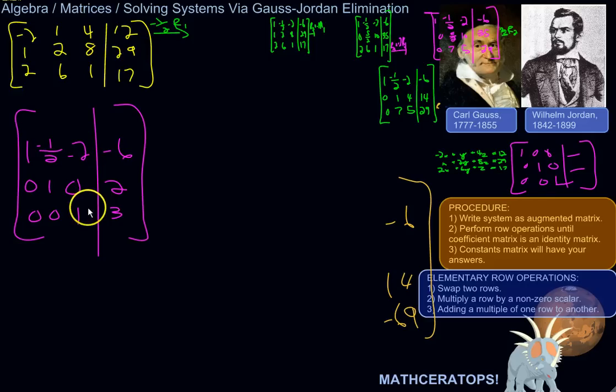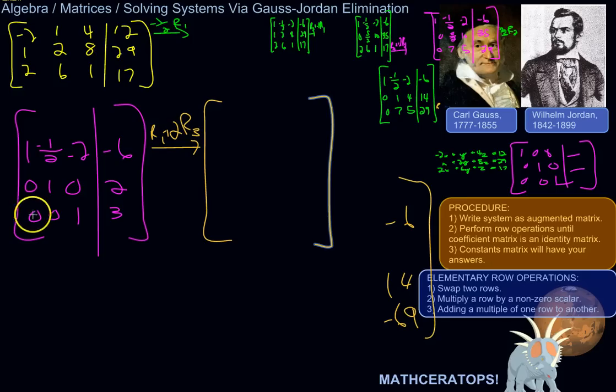Now, we can make this into a 0, multiply row 3 by 2, and add it to row 1. So we're going to take row 1, and we're going to add 2 times row 3. 2 times 0 is 0, plus 1 is 1. This stays as negative 1 half, but 2 times 1 is 2, plus negative 2 is 0. And then we've got 2 times 3 is 6, plus negative 6 is 0.